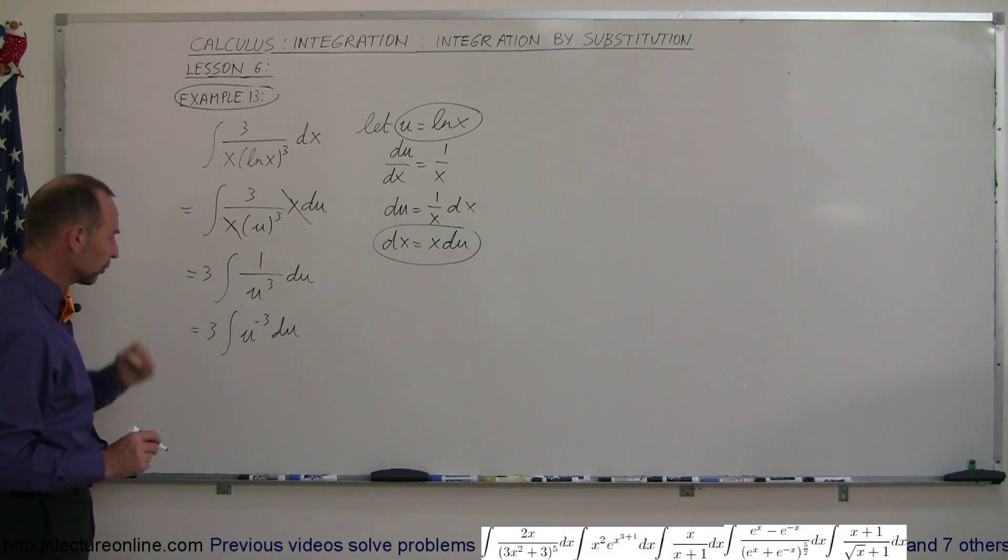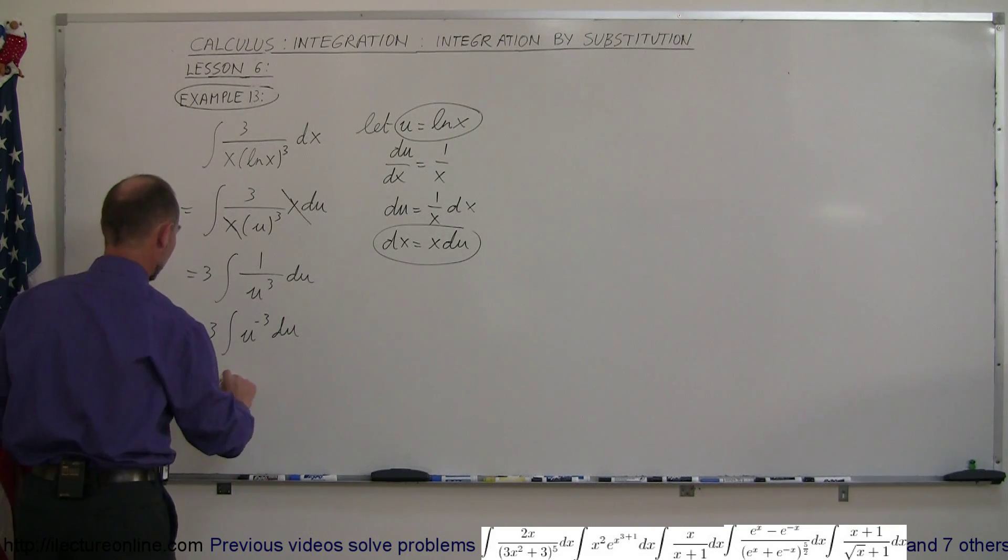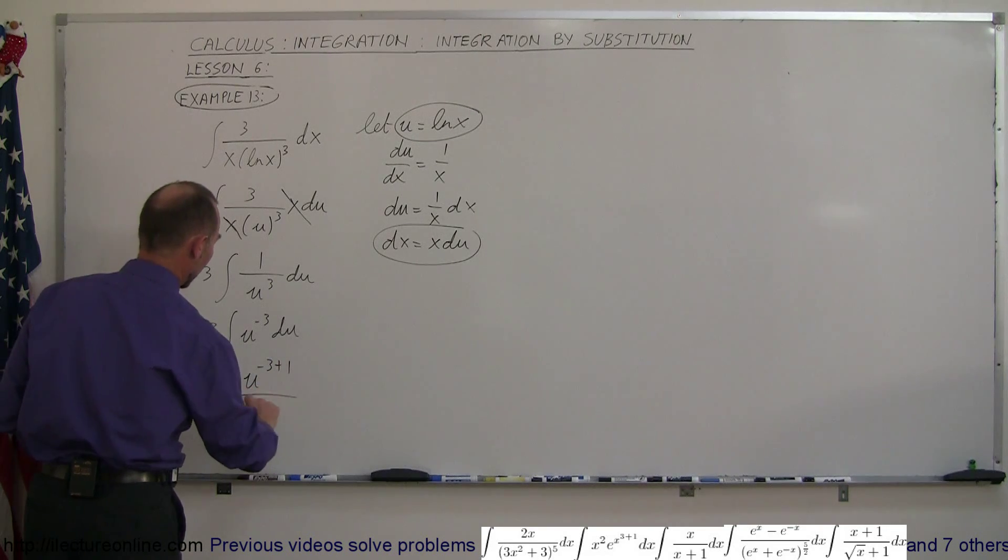And then of course I know how to integrate. I'm going to add one to the exponent, divide by the new exponent, so this is equal to 3 times u to the minus 3 plus 1 over minus 3 plus 1, plus a constant of integration.